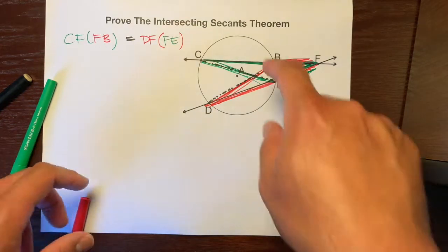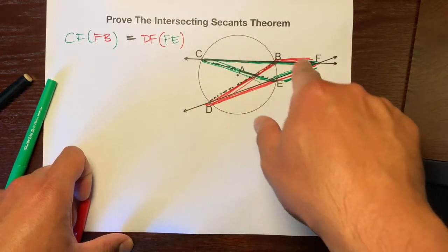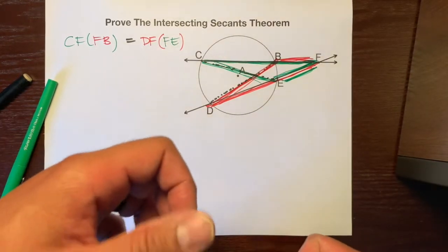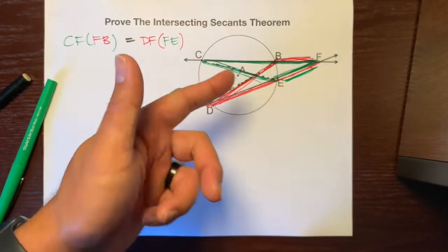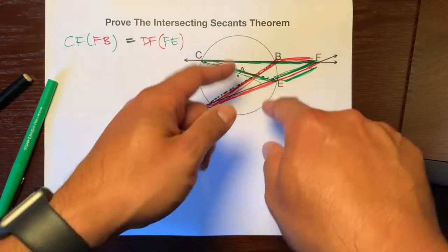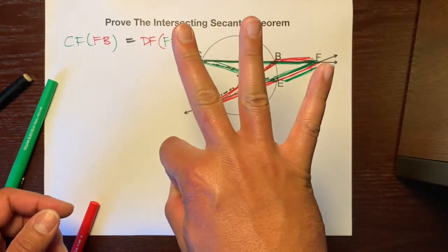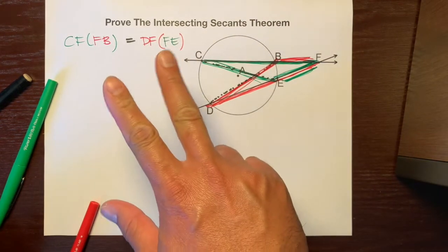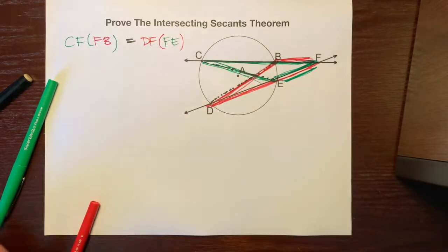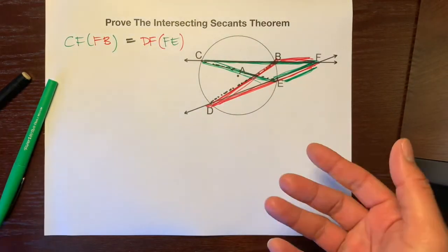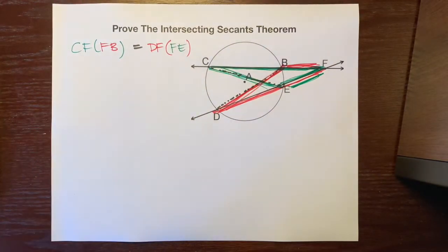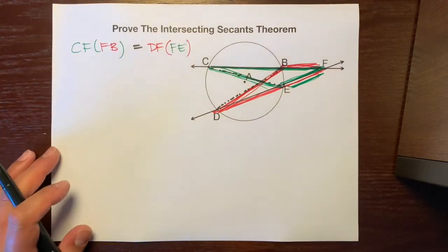We're going to prove that the green triangle is similar to the red triangle. Remember, similarity means all angles are congruent and all sides are proportional. We'll prove this using one of the three similarity methods: Angle-Angle (AA), Side-Side-Side (SSS), or Side-Angle-Side (SAS). I'll use a flow chart, though a two-column proof works the same way.